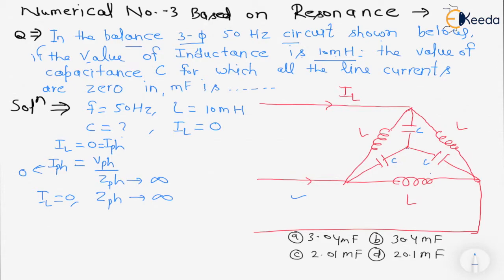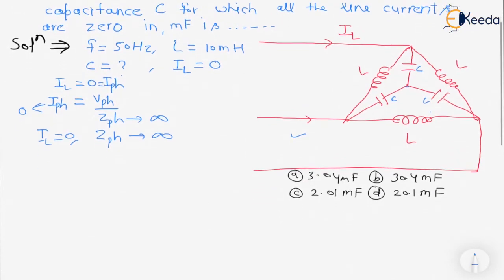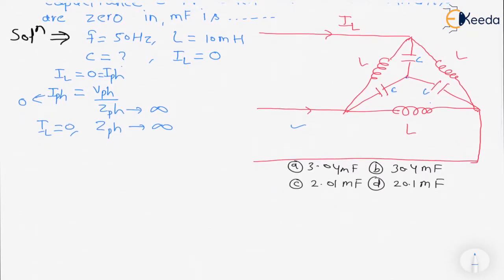Here first we need to convert this star into delta. So C, C, C connected in star and we need to convert this in delta. When we convert this circuit into delta, we can represent this L...